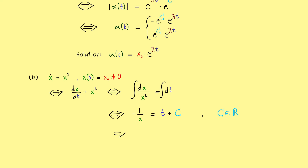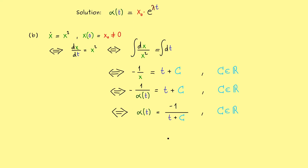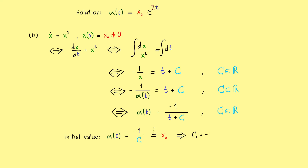Never forget the constant at this step. Making it consistent with our notation, we use alpha of t instead of x. Taking the inverse gives alpha of t equals minus 1 divided by t plus c. This is the general form of the solution. We find c by putting t equals 0: we get minus 1 divided by c, and by the initial value this should equal x0. So c equals minus 1 divided by x0.